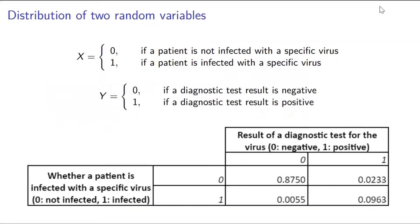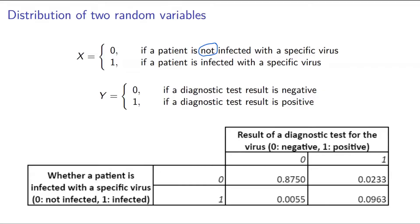Let's say we have two random variables, X and Y. The random variable X takes a value of zero if a patient is not infected with a specific virus, and it takes a value of one if a patient is actually infected with a specific virus. You go to a diagnostic test center and they do a test. The random variable Y takes a value of zero if the diagnostic test is negative for that specific virus.